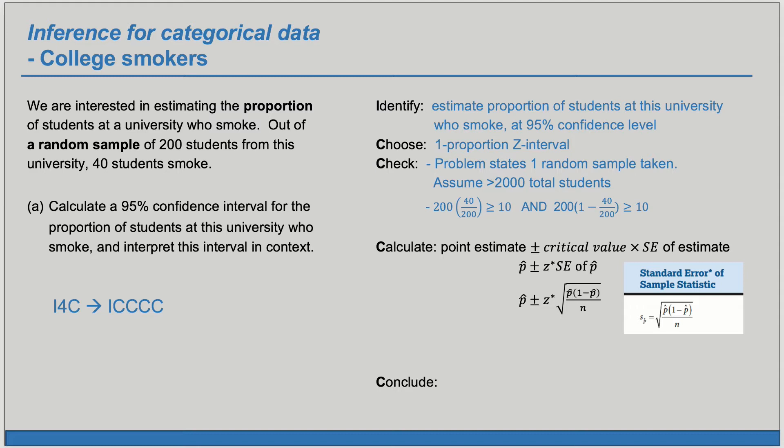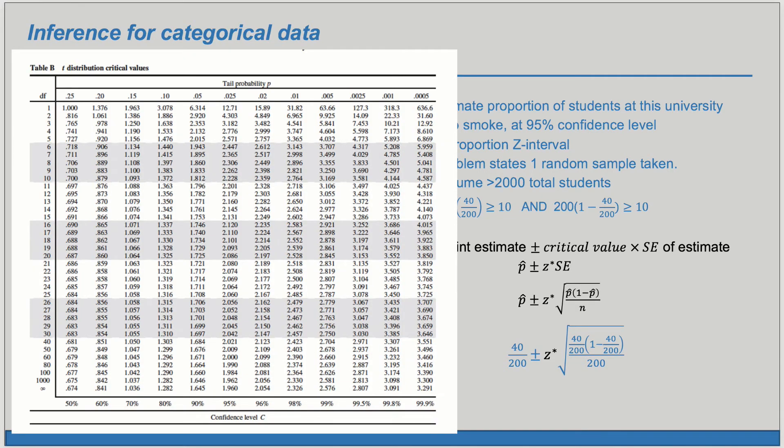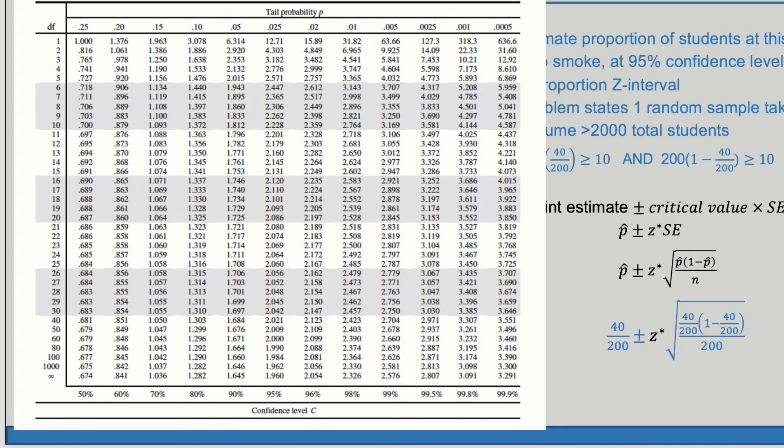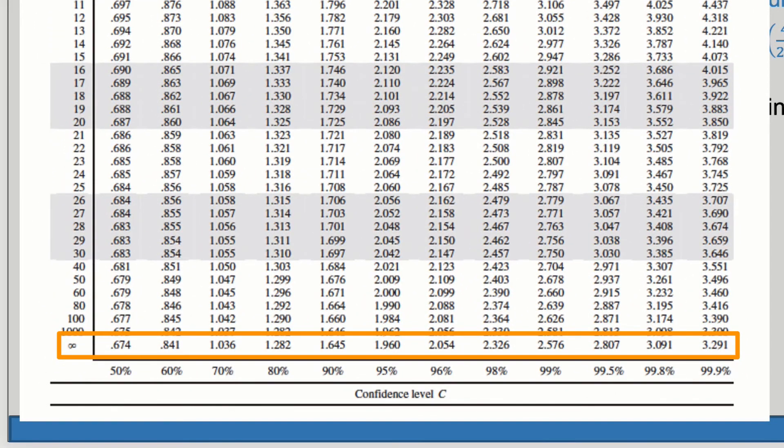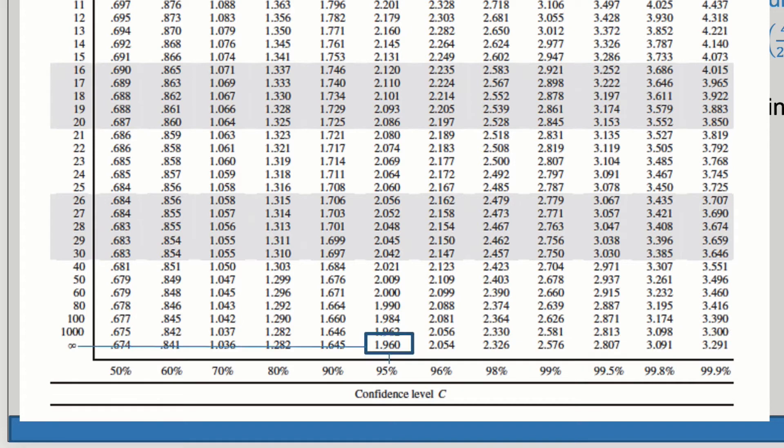P-hat the sample proportion is 40 over 200, and the sample size is 200. Now we just need z-star. If we're not sure what z-star is we can find a t table. On the t table we'll look at rho infinity for z-star. With rho infinity and 95 percent confidence level, we see that our critical value z-star is 1.96.